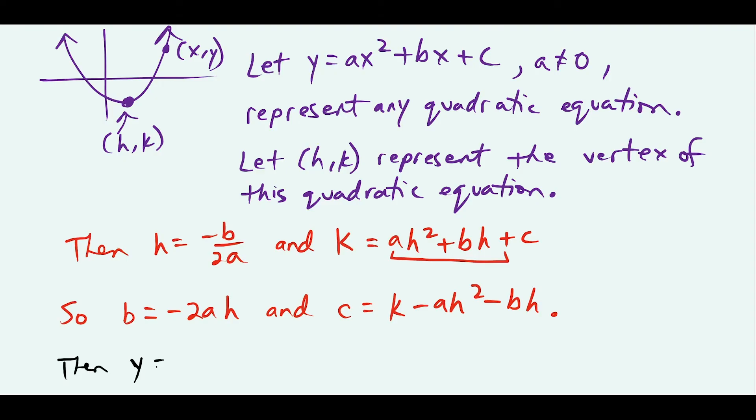So then we can say y equals ax squared. Now instead of b times x, I'm going to leave a space, and instead of b, I'm replacing it with negative 2ah. And at the end, instead of plus c, we're going to replace it with k minus ah squared minus b times h.